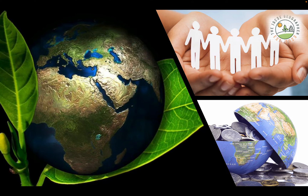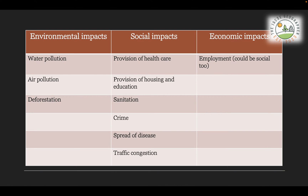Like most case study questions in Paper 1, it's useful to think of issues, problems, or causes by three main strands: the first being environmental, but also social and economic. One effective way of doing this is through a table or a mind map, and here are just some of the general issues you should probably know when it comes to looking at the problems caused by overpopulation.